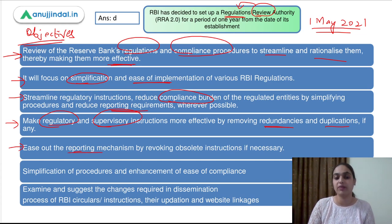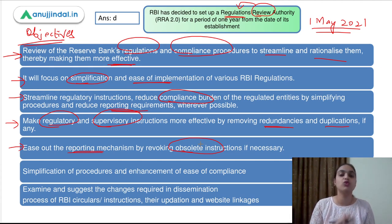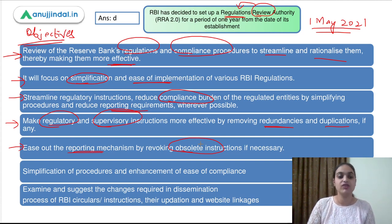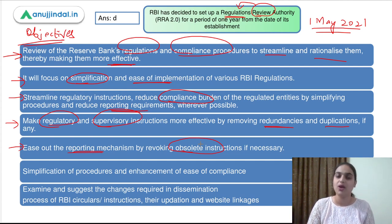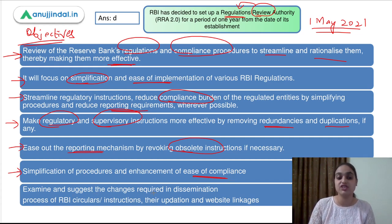Moreover, we need to ease out the reporting mechanisms by revoking the obsolete instructions. There are certain regulations which are not very apt for the current scenario and business environment. We need to remove those unnecessary regulations which, if existing, should be reviewed and removed. Simplifying the procedures and enhancing the ease of compliance is one of the major objectives of this authority. Furthermore, we'll examine and suggest how we can improve the dissemination process of circulars, instructions, and updation of the website.